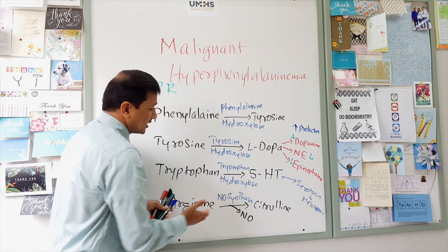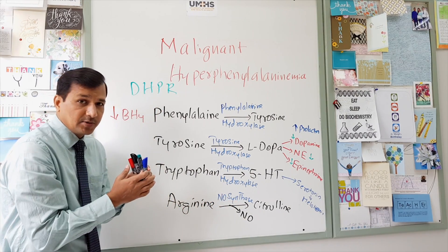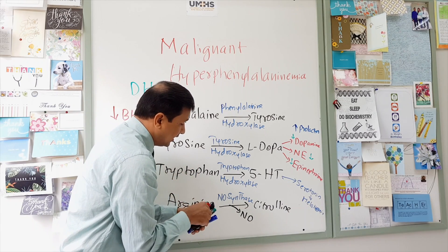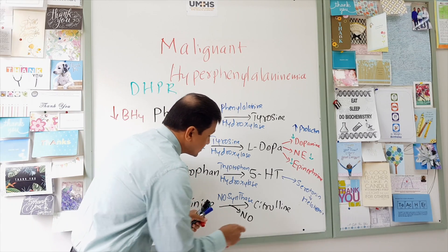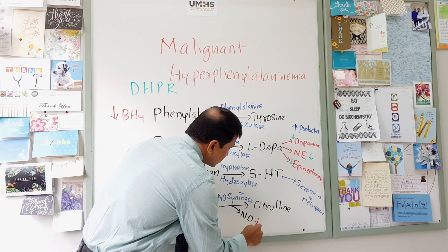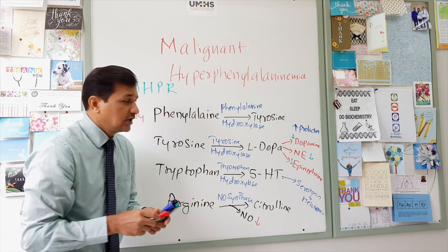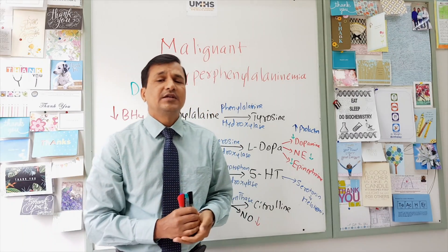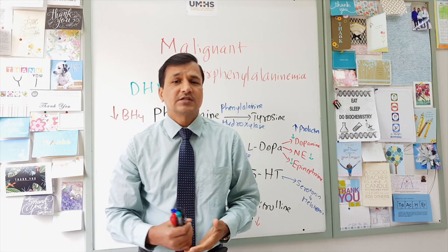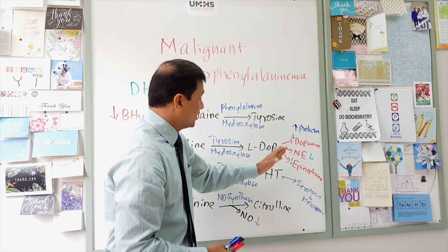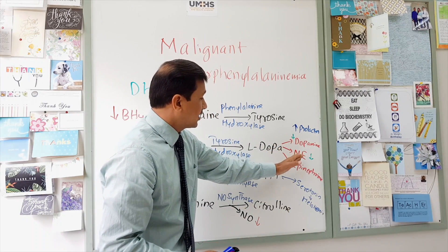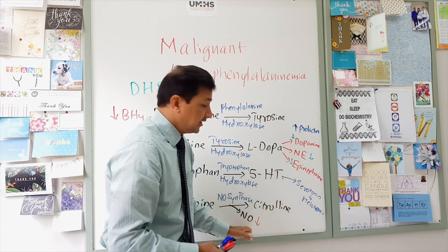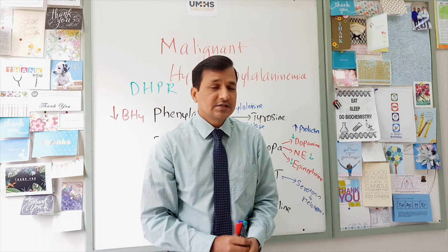Additionally, nitric oxide synthase also requires tetrahydrobiopterin, so decreased BH4 availability leads to decreased nitric oxide production. Overall, malignant hyperphenylalaninemia results in decreased synthesis of multiple neurotransmitters and signaling molecules: dopamine, norepinephrine, epinephrine, serotonin, and nitric oxide are all decreased, while prolactin is elevated.